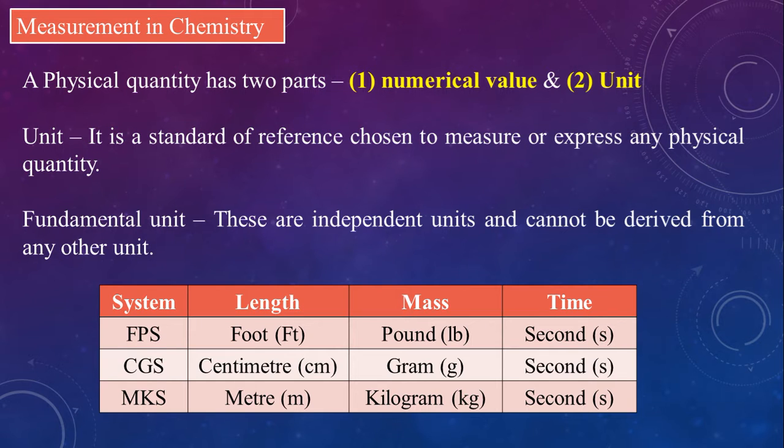So accordingly, FPS system was foot for length, pound for mass and second for time. After several years, CGS system was developed which has centimeter for length, gram for mass and second for time. Last around 100 years, MKS system has been used, where M stands for meter for length, K for kilogram for mass and S for second for time.